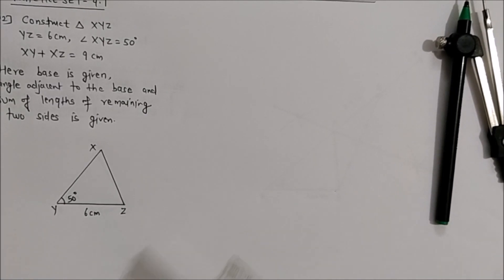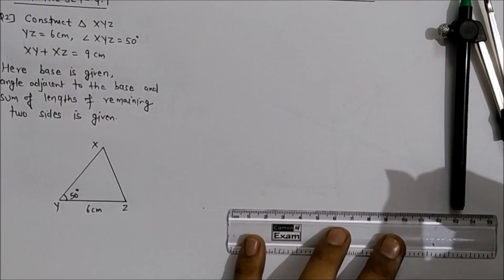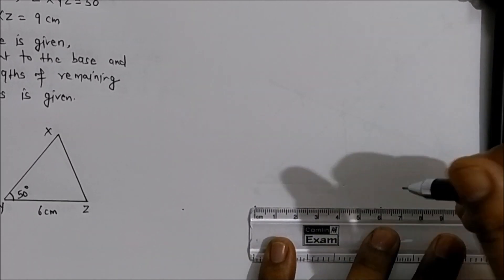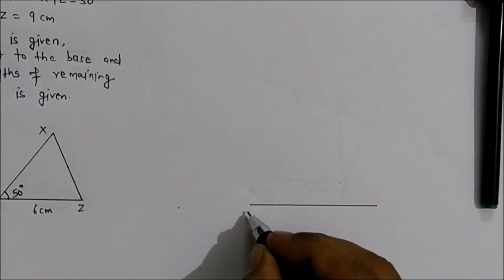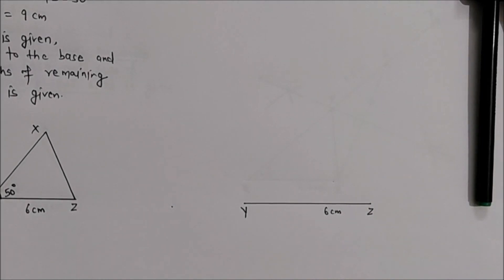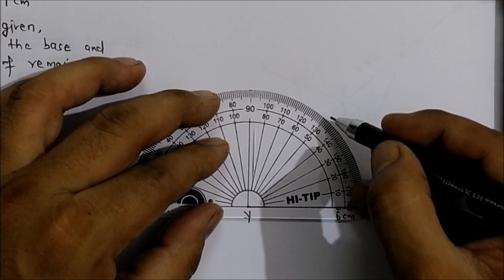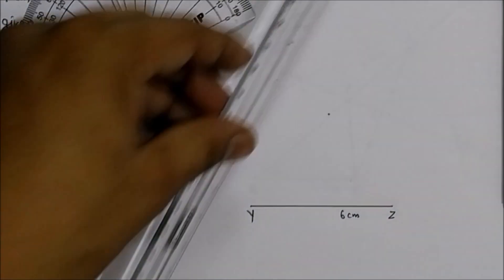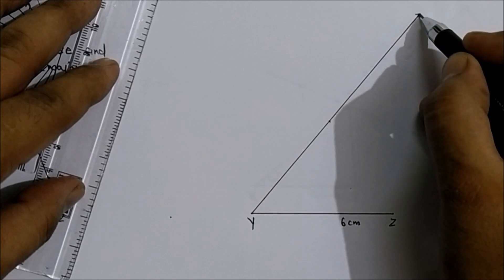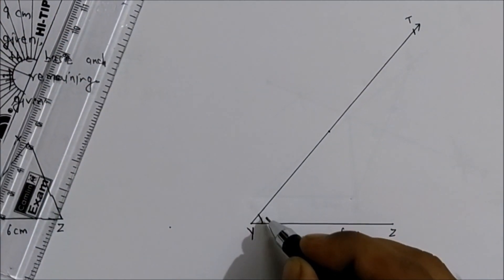First we will draw the base YZ = 6 cm. Now angle Y is given as 50 degrees, so at point Y we will make an angle of 50 degrees. Draw a ray making an angle of 50 degrees — name the point on the ray as T — and mark the angle as 50 degrees.